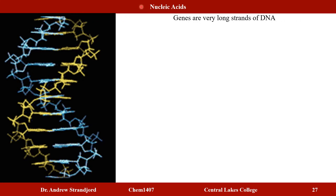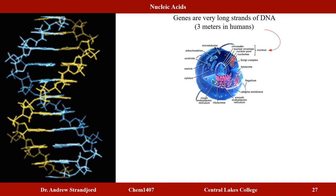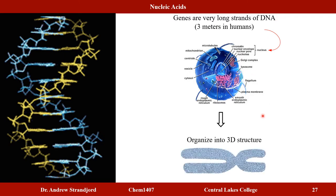Genes are very long strands of DNA — in humans, up to three meters long — and all of that DNA must fit into the very small nucleus of every cell. When DNA is organized into a three-dimensional structure, we call that structure a chromosome: a series of nucleic acids organized into a chromosomal structure.